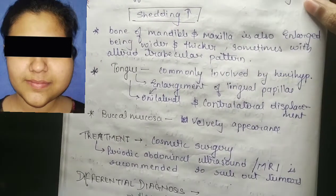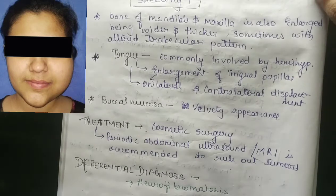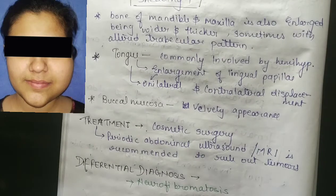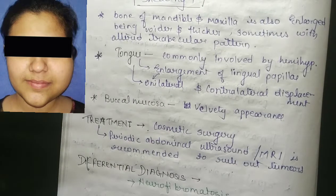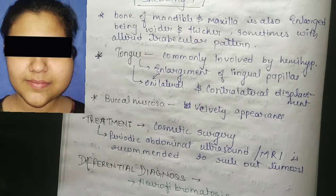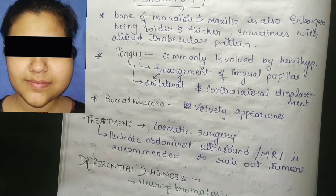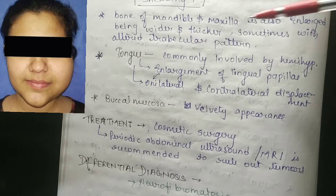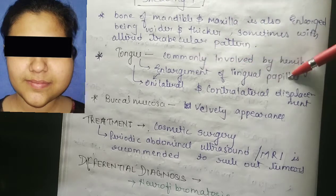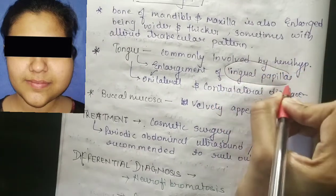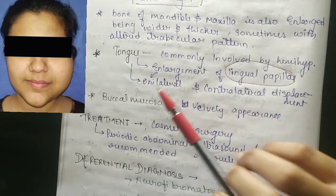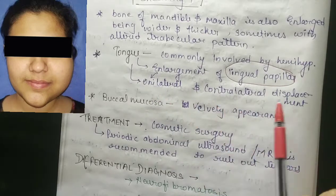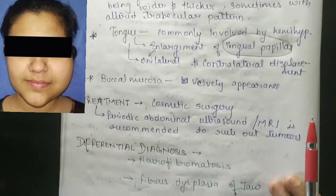The bone of the mandible and maxilla is also enlarged, being wider and thicker, and sometimes showing an altered trabecular pattern. The tongue is commonly involved in hemihyperplasia, and there is an enlargement of lingual papilla. This enlargement can be unilateral with contralateral displacement.